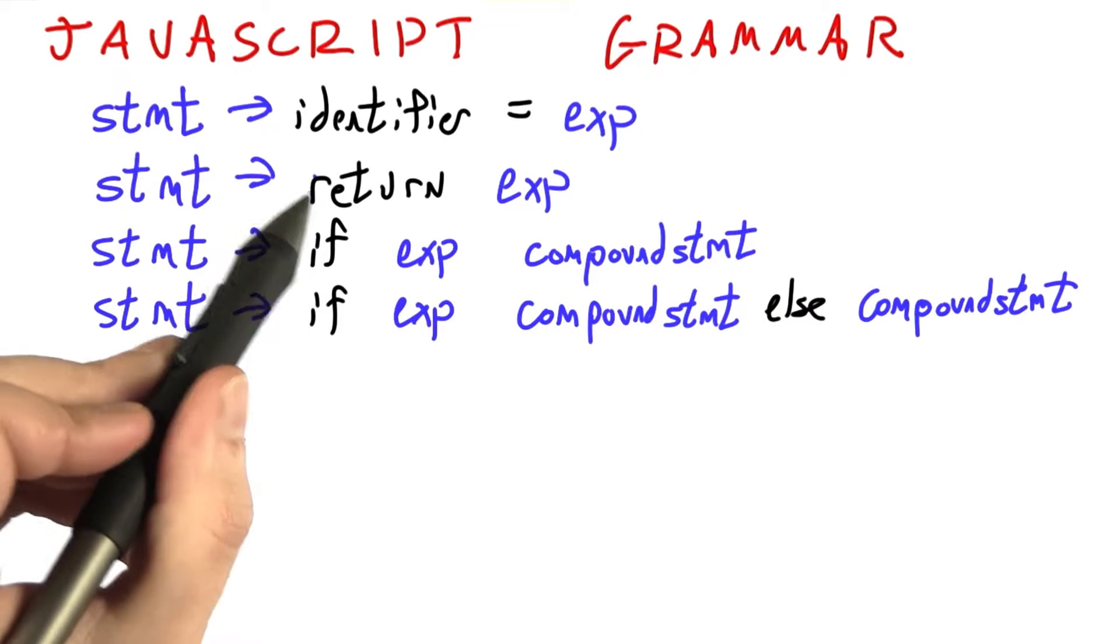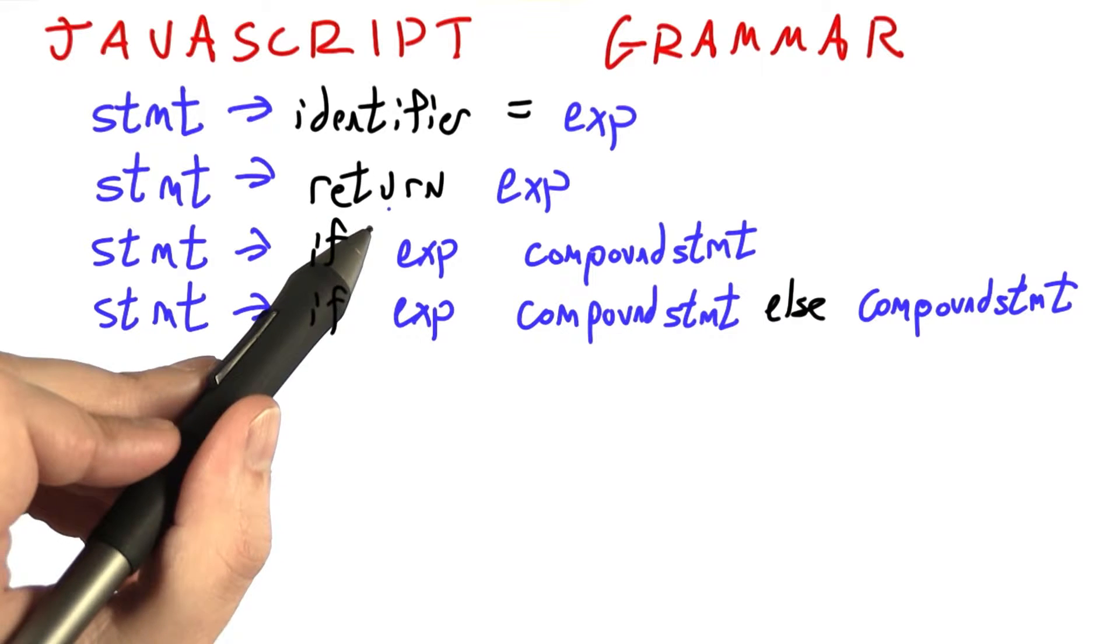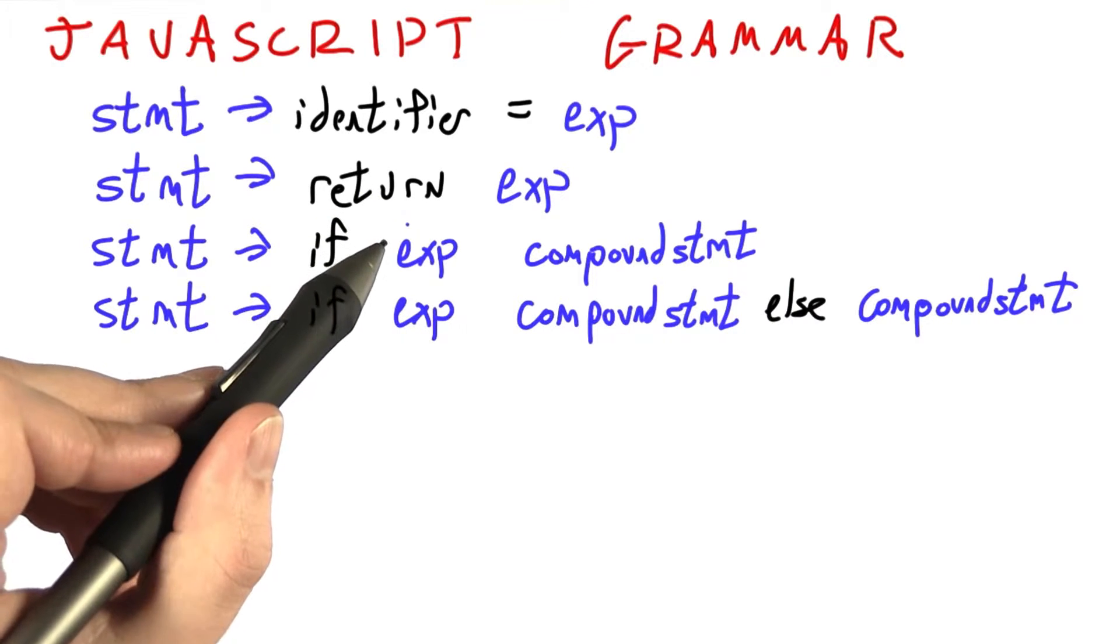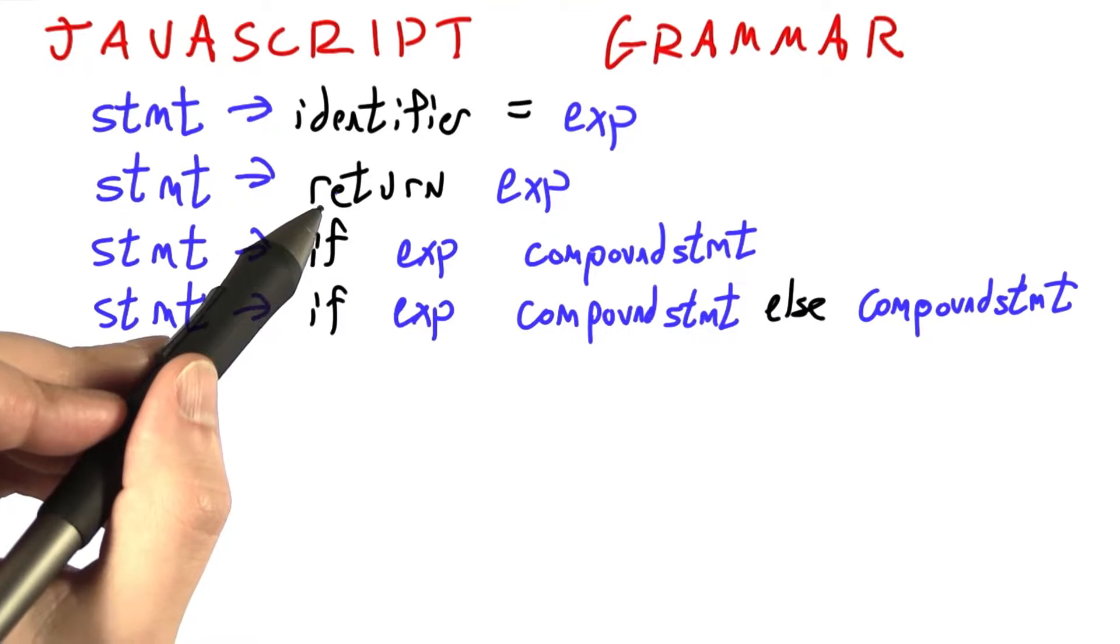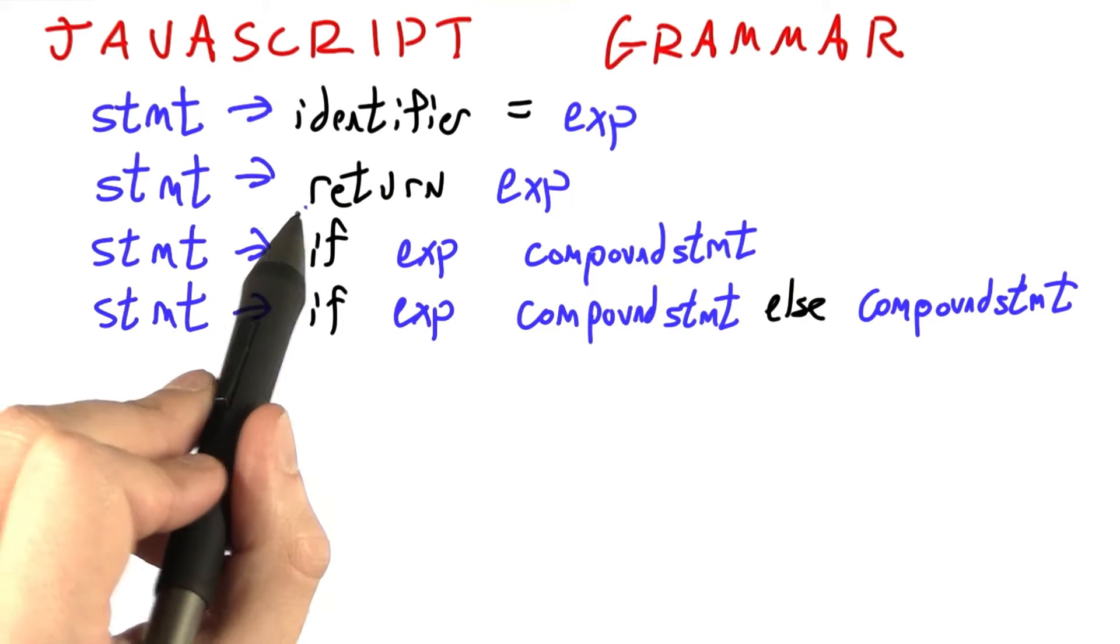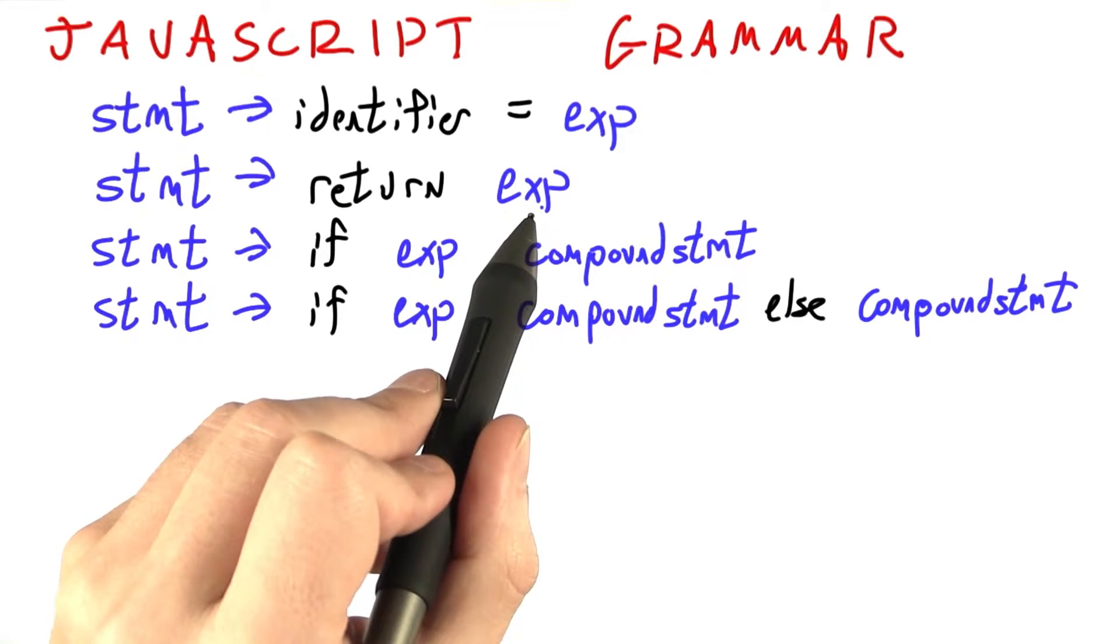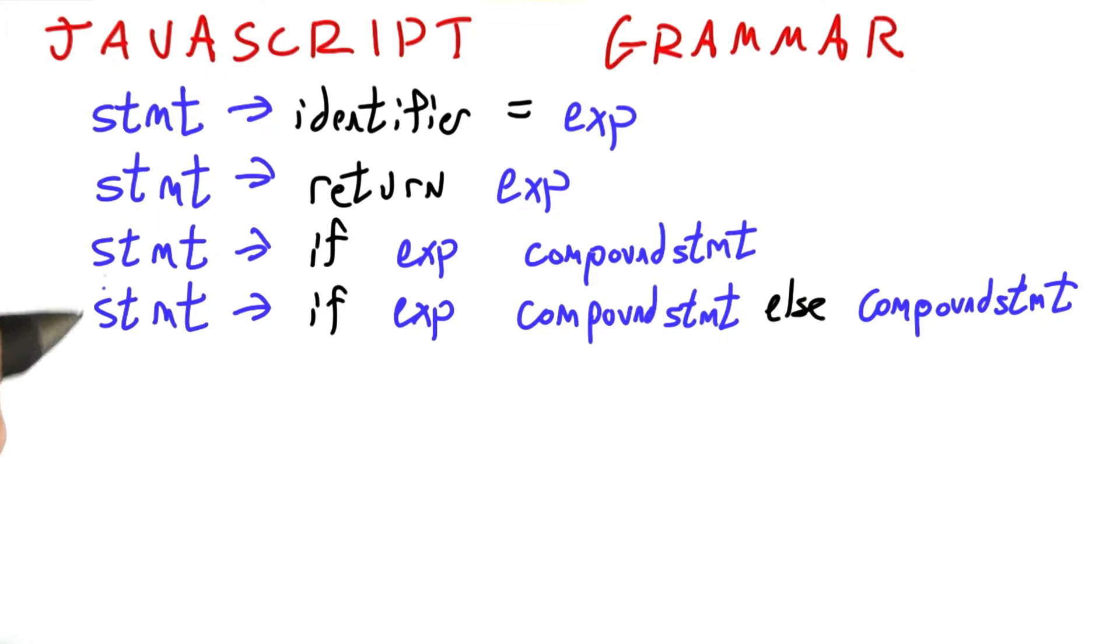Another kind of statement is the return statement. At the end of absolute value, or Fibonacci, or factorial, or almost any function or procedure, we want to return with the final value. Return an arbitrary expression, that becomes the value of the function.